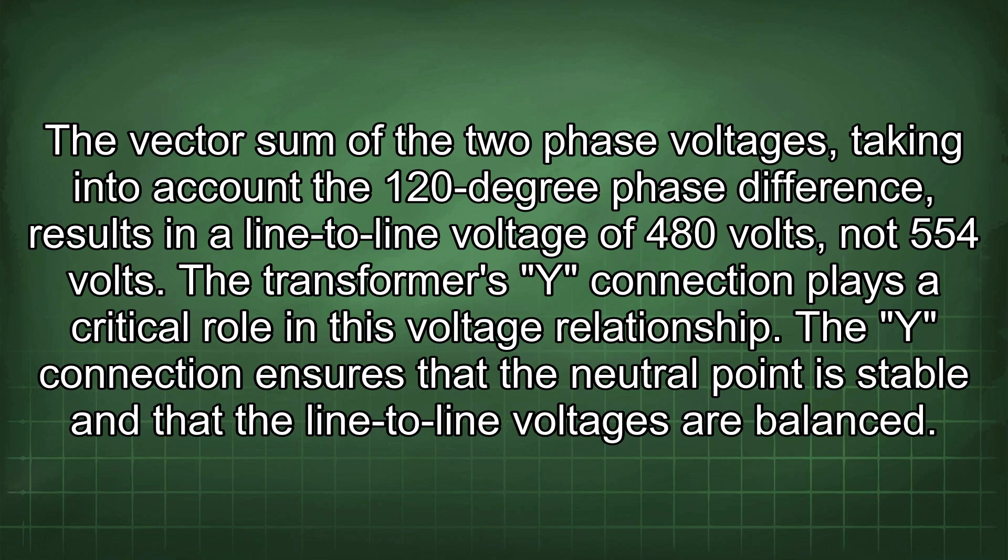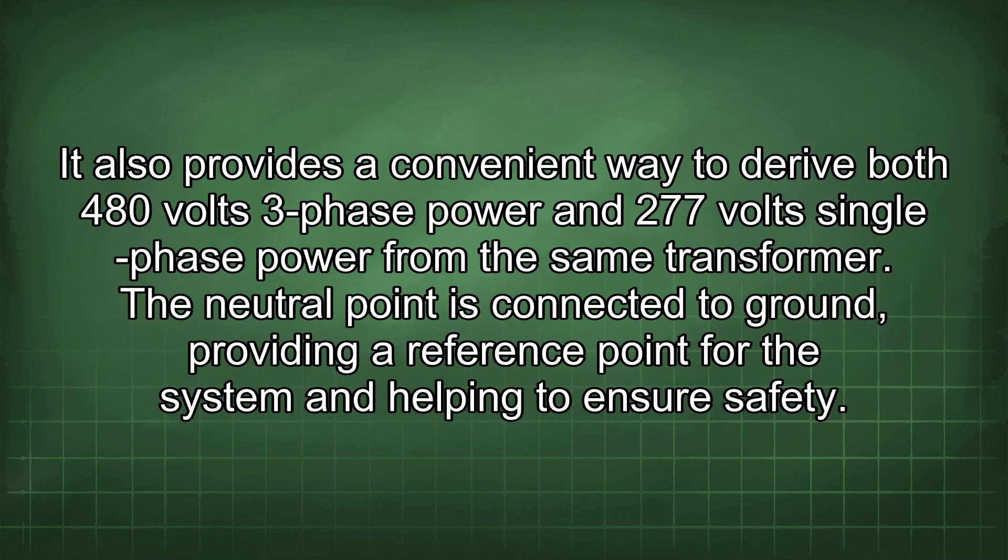The transformer's Y connection plays a critical role in this voltage relationship. The Y connection ensures that the neutral point is stable and that the line-to-line voltages are balanced. It also provides a convenient way to derive both 480 volts 3-phase power and 277 volts single-phase power from the same transformer. The neutral point is connected to ground, providing a reference point for the system and helping to ensure safety.